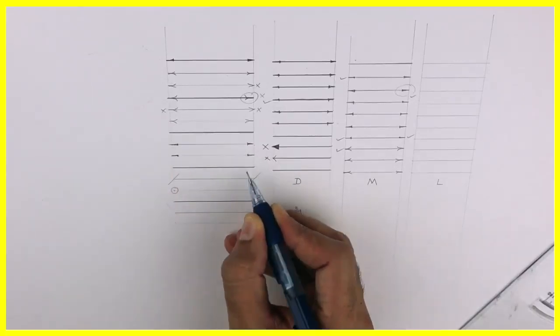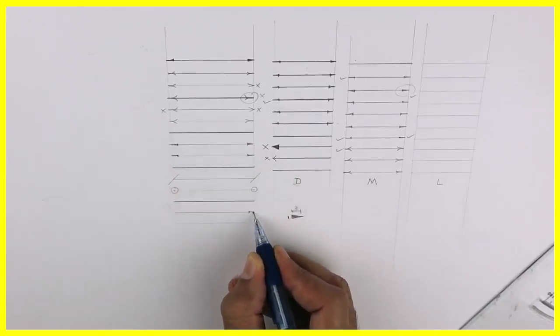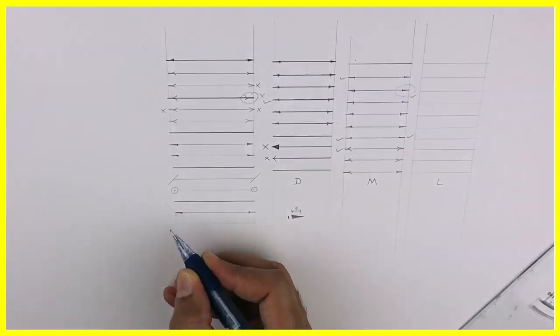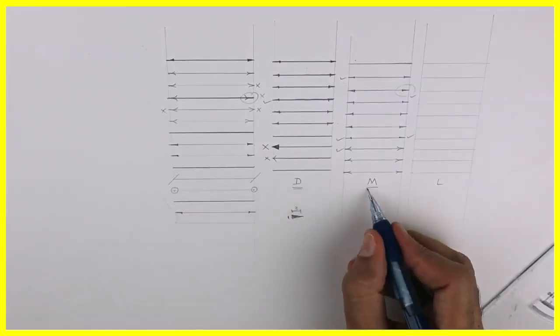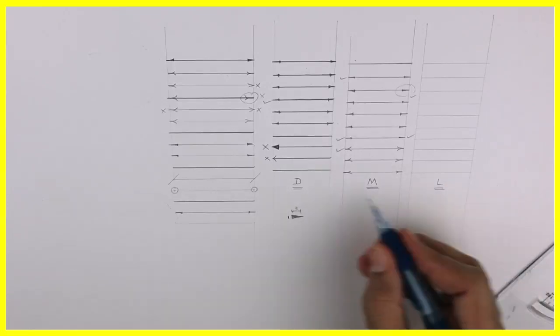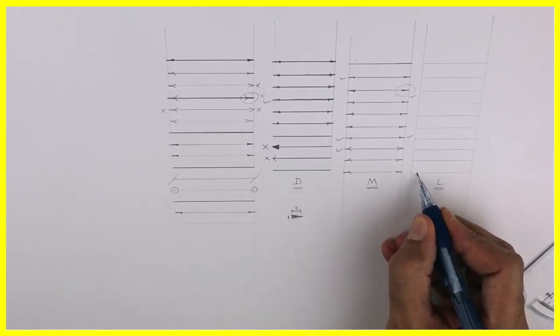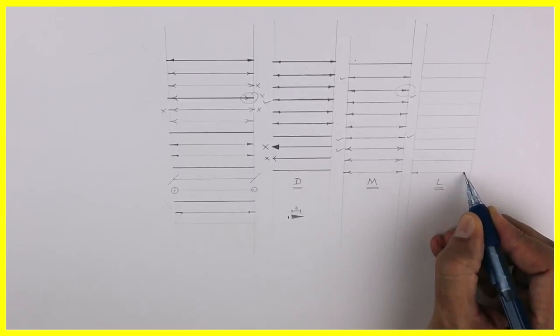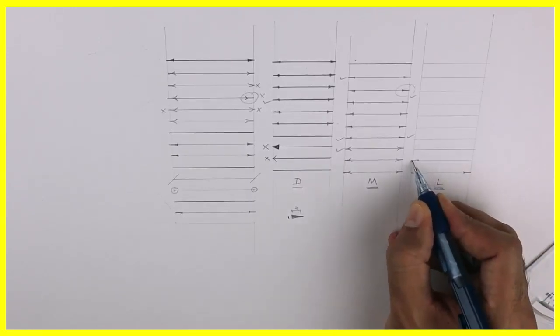So this is very useful in engineering drawing, technical drawing, diploma, degree colleges, everywhere. Dark line, medium dark line and light line. These three types of lines you should know. And you should know how to draw arrowheads. Thank you.